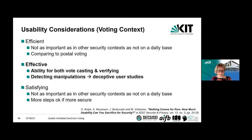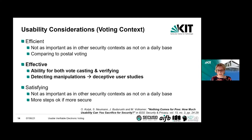We conducted a user study in which we gave people different types of systems, ranging from very simple ones to more end-to-end verifiable systems, and talked with them about how many extra steps are acceptable. The answer from all of them was: it's okay to take these extra steps if it's needed from a security point of view. That's why I highlighted effectiveness — having effective verifiability is the most important aspect.